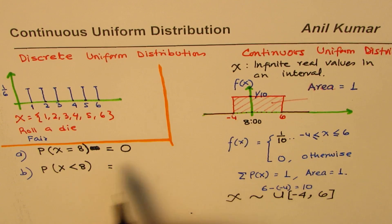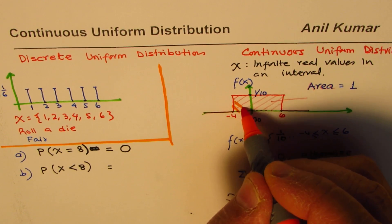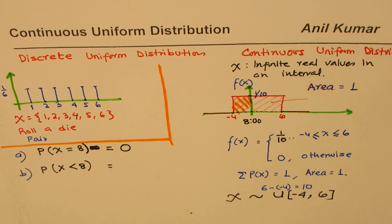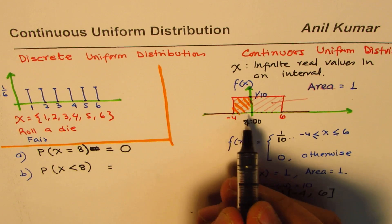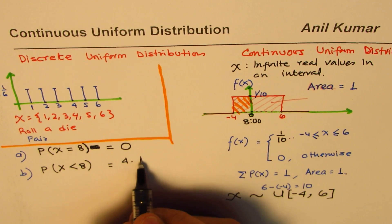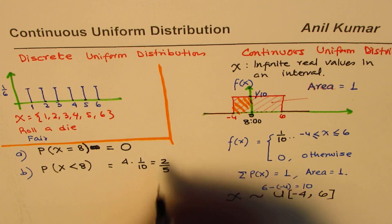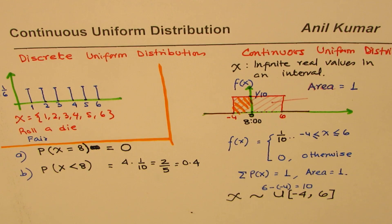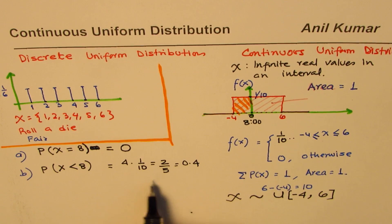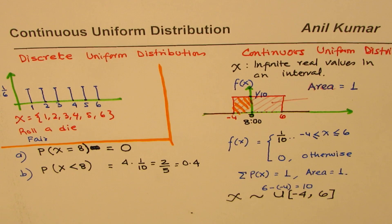For part b, the probability of the teacher coming before time means arriving before 8 a.m. — so we are looking at the period from minus 4 to 0. That area equals the width of 4 units multiplied by the height of 1/10. So the probability is 4/10, which equals 2/5 or 0.4.